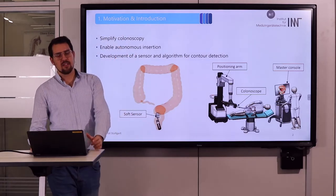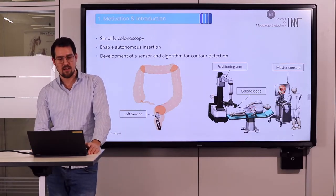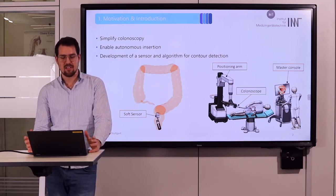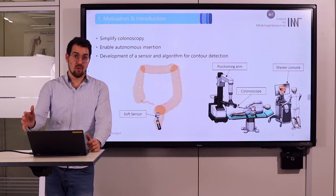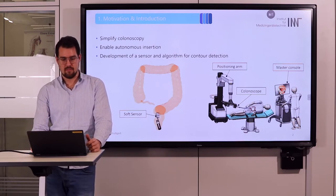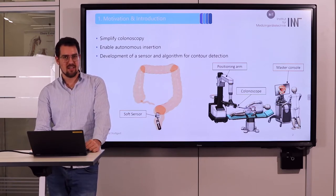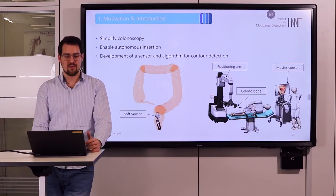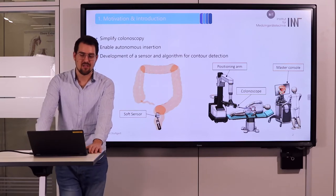We want the insertion of the colonoscope to be simplified and done more or less autonomously, so the user at the master console just gives the input forward or backward. However, the robotic system must recognize the contour of the intestine to capture the curved pathway and enable injury-free and painless insertion of the endoscope.